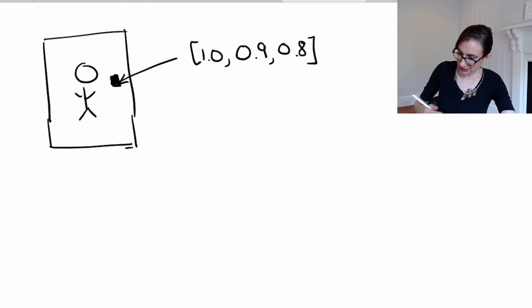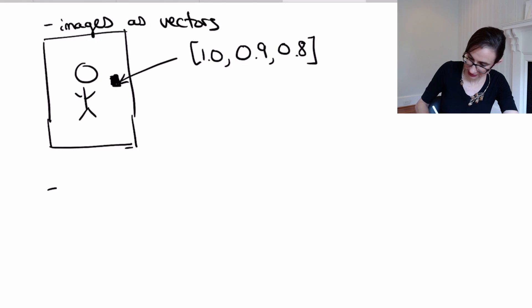And so an image can be considered as a vector, and in fact almost any object in this world can be represented as a vector. So let's say here, images as vectors, and then let's say here anything as vectors. Let me give you an example.